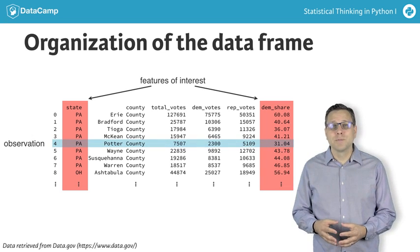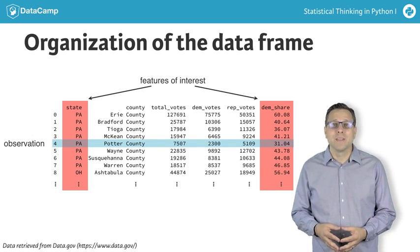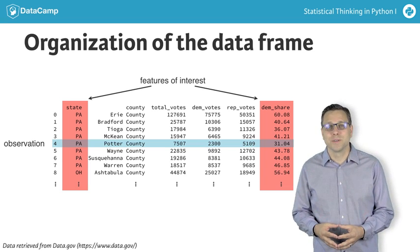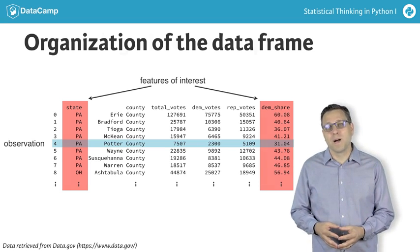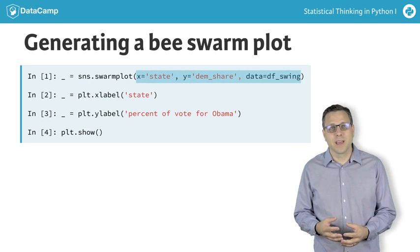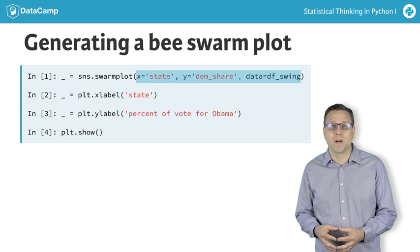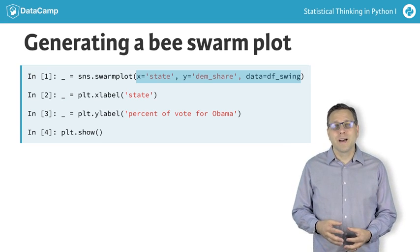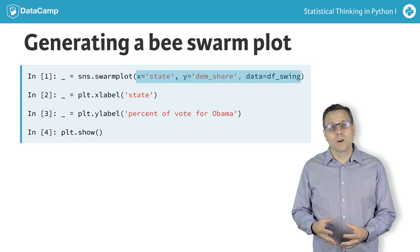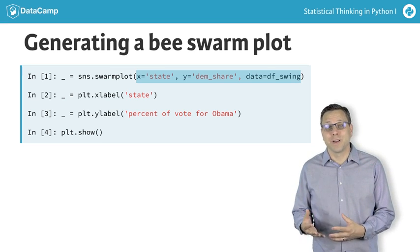In this case, an observation is a county, and the features are the state and the democratic share of the vote. To make the plot, you need to specify which column gives the values for the y-axis, in this case the share of the vote that went to Democrat Barack Obama, and the values for the x-axis, in this case the state. And of course, you need to tell it which data frame contains the data.